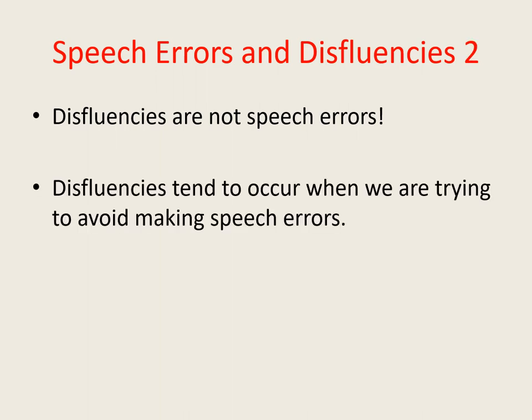Having said that, it's certainly true that speech errors and disfluencies tend to be closely associated with each other, and in particular people often become disfluent at moments when they're trying to avoid making speech errors. Similarly, stammering involves certain types of disfluencies and people may stammer when they're trying to avoid making speech errors. We'll talk about this in detail later on in the slideshow.